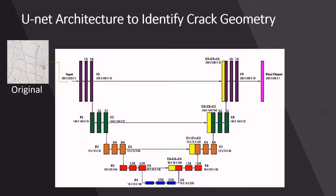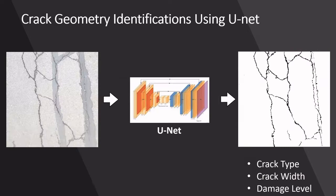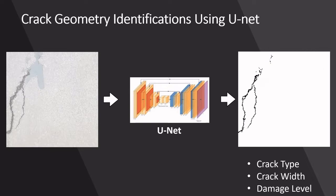Crack segmentation was achieved using a U-Net architecture. U-Net can identify crack geometries such as crack type, crack width, and damage level.